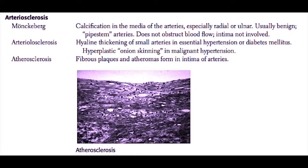Arteriosclerosis is hyaline thickening of the smaller arteries, and is commonly seen in essential hypertension or diabetes mellitus. The classic finding on microscopy is hyperplastic onion skinning, which is commonly seen in malignant hypertension. Arteriosclerosis in the kidney can lead to renal failure.